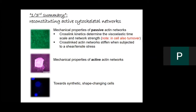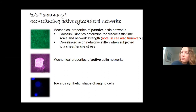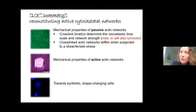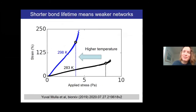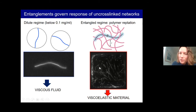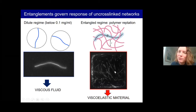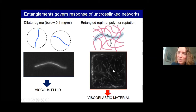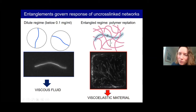Question about reptation: reptation is the longitudinal motion of polymers along their lengths within virtual tubes formed by entanglements — contacts with other polymers. In the movie, fluorescently labeled actin moves like a snake along its length, confined in the transverse direction by contacts with the surrounding unlabeled actin. In the dilute case, the filament is free to experience large transverse fluctuations and its center of mass can move freely.